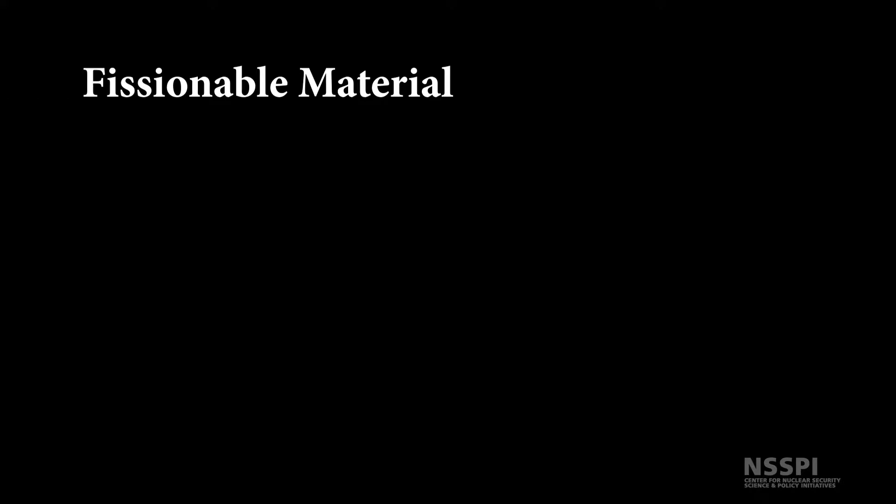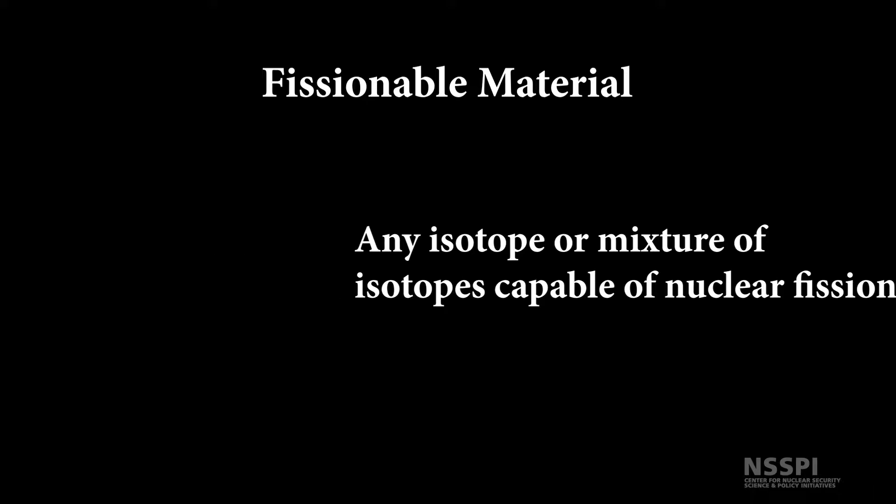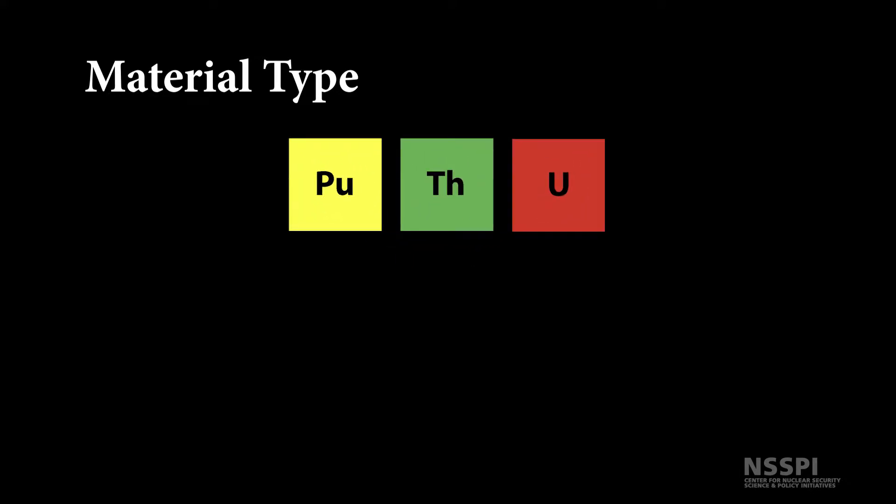Fissionable material is any isotope or mixture of isotopes that is capable of nuclear fission. Nuclear material type is the classification of nuclear material according to the element it contains and, in the case of uranium, the degree of enrichment. When we talk about nuclear material in this module, we are referring to uranium, plutonium, and thorium in any form.